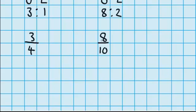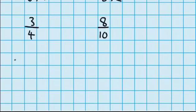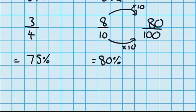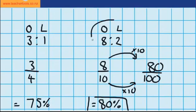Looking at both of these fractions, they're going to be nice and easy to change into percentages, because I know that 3 quarters is the same as 75%. So now I just need to change 8 tenths into a percentage. 8 tenths is 80%, but we could just check it — we want to change it so that the denominator is out of 100. To do that I had to make it 10 times bigger, so I'd have to do the same to the numerator. 8 becomes 80, so it's really easy to see that this second mixture is going to taste the most orangey.